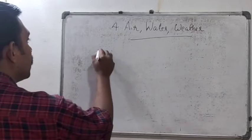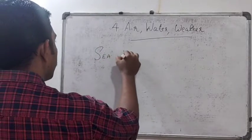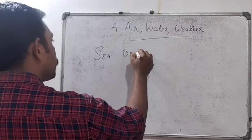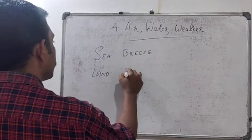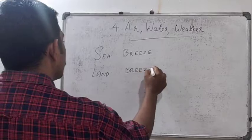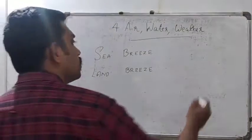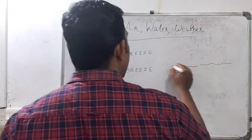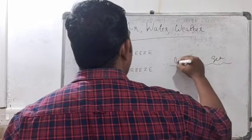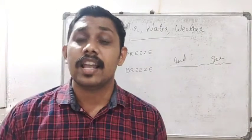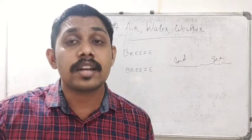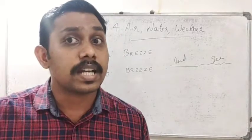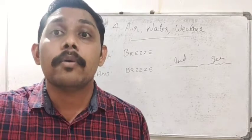Now there are two types of breeze: sea breeze and land breeze. Let us consider the sea region and the land region. In the daytime, the rays from the sun come to both sea and land, but the land gets heated very fast.